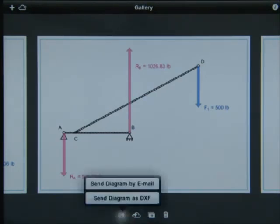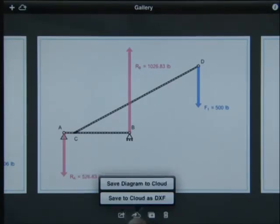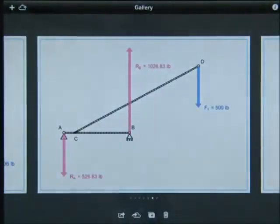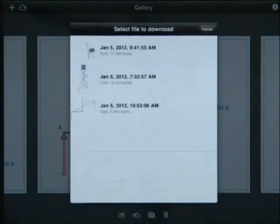You can mail these free body diagrams as a Force Effect source file. Your recipient could then open them and modify the diagram in Force Effect. You can also attach a DXF copy of the diagram. You can also send your diagrams to your account in the Autodesk cloud. You can download diagrams from that cloud account as well.